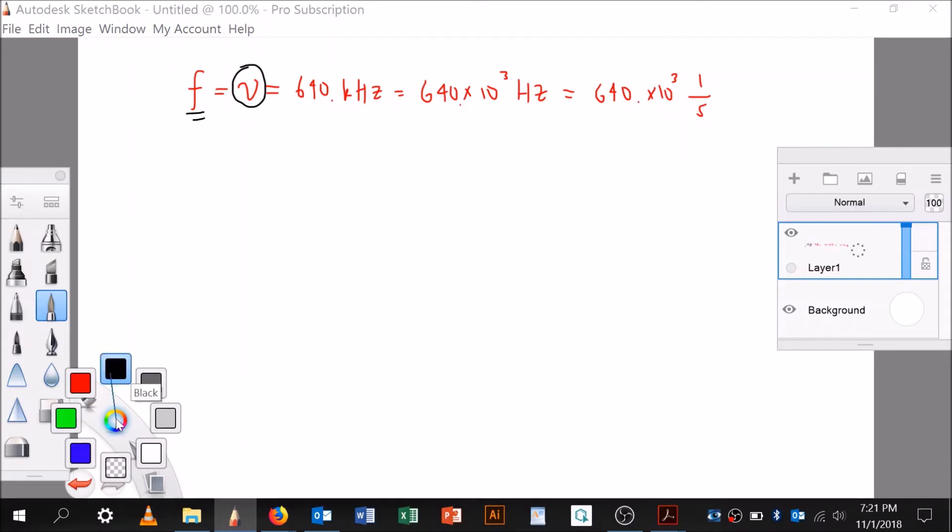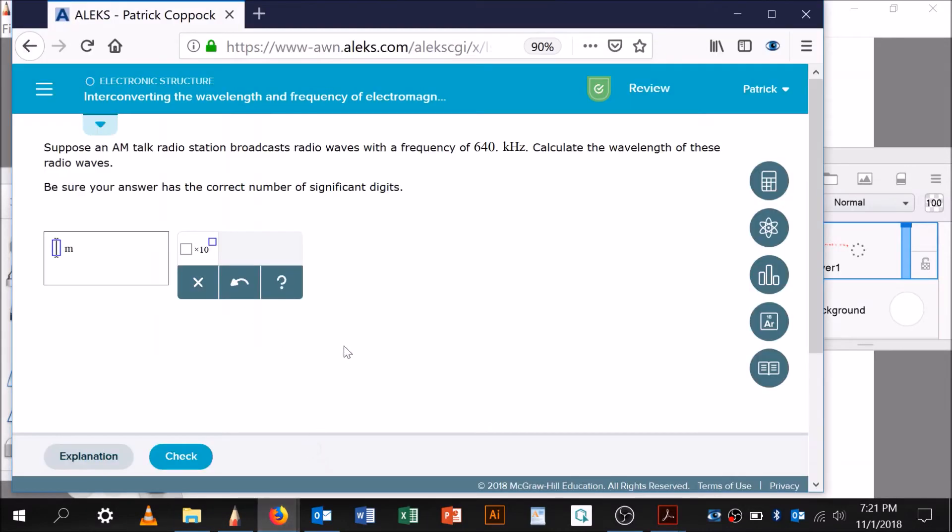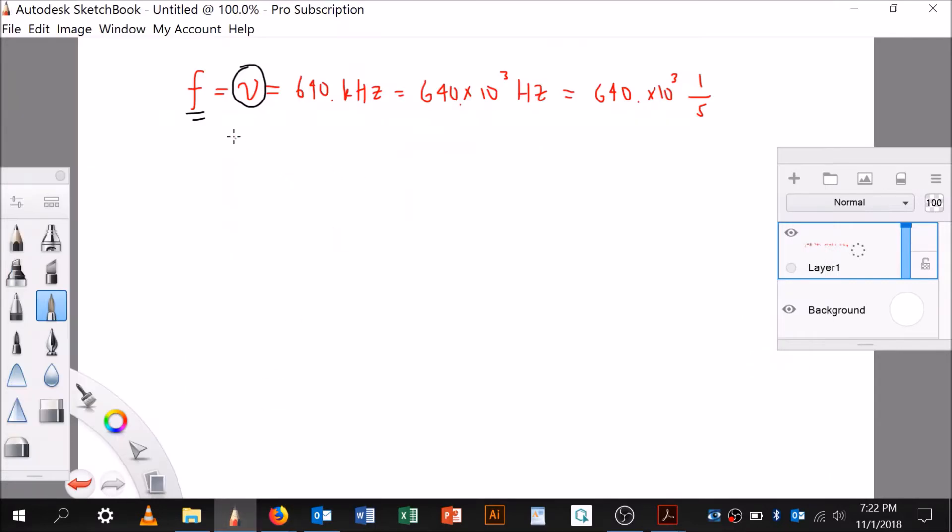So then I'm going to go back and read the question again. All I did was interpret so far. This AM talk radio station broadcasts radio waves with a frequency of blank. And that's all I did so far. Now, calculate the wavelength of these radio waves. So I'm going to ask for the wavelength. What I'm asking for here is the wavelength, and that's it. Now, I'm using lambda for wavelength, and I think Alex does too.